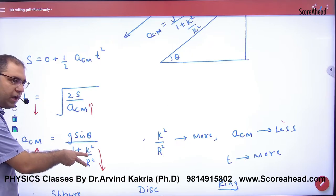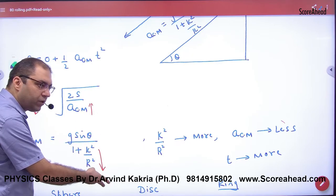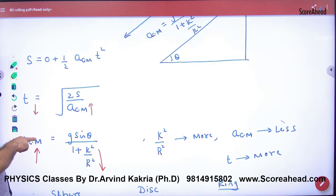This will be less: k² by r². Acceleration will be less. And the acceleration will be less than the time taken will be less.